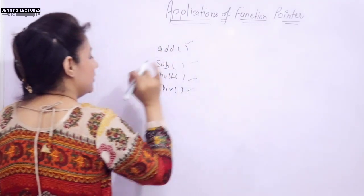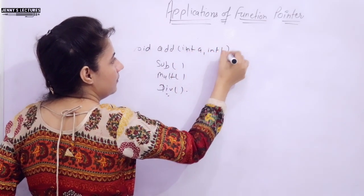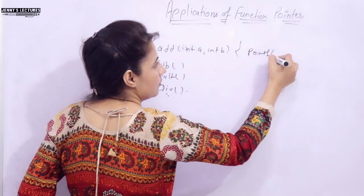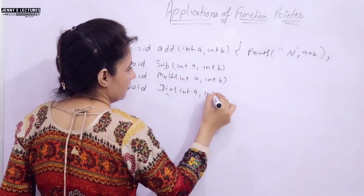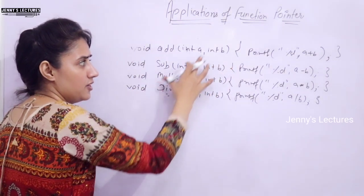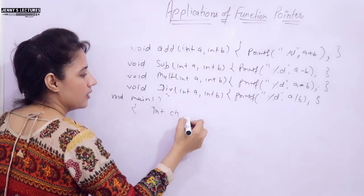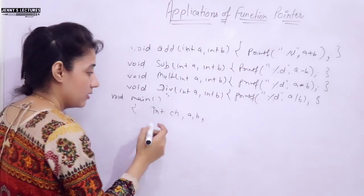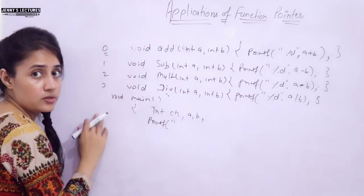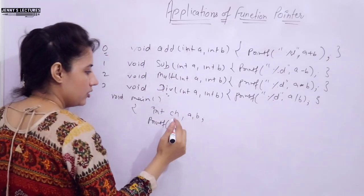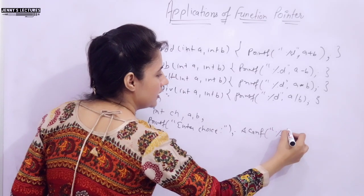We have four functions. Let me write simple code: void add(int a, int b) and in the definition just write printf("%d", a + b), and similarly for subtract, multiply, and divide. Now in main, I am taking one choice variable and two integer variables a and b. I will print the menu — 0 for addition, 1 for subtraction, 2 for multiplication, 3 for division — and then read the choice using scanf("%d", &choice).